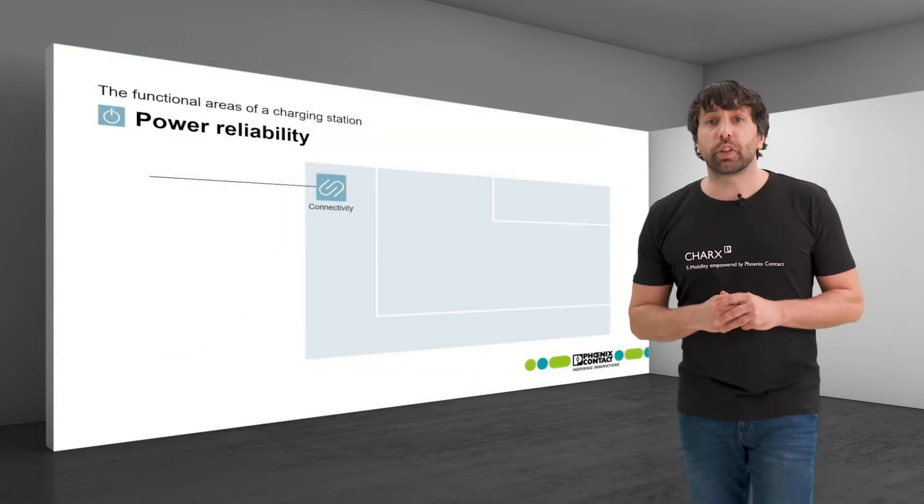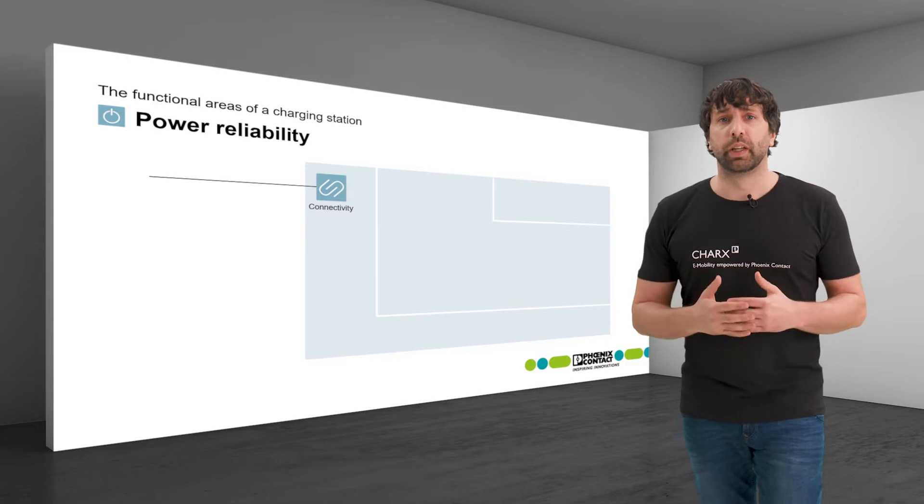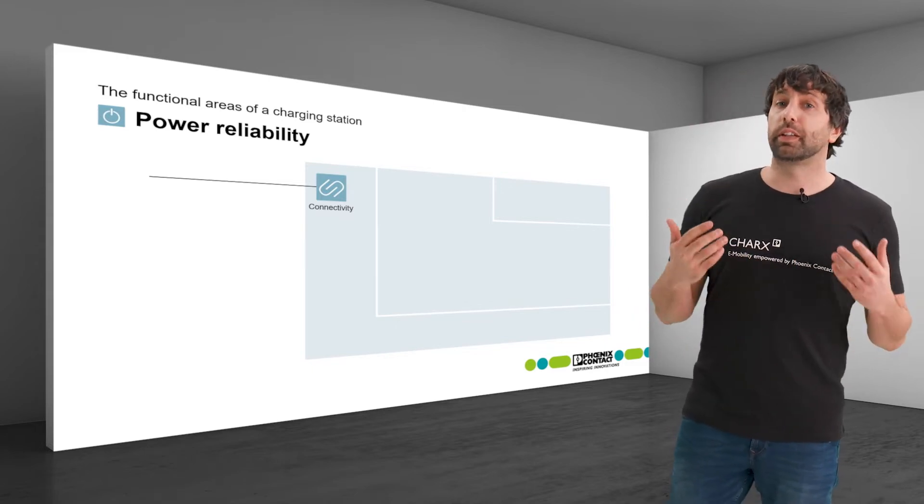First, the charging station is connected to the grid. Details are described in the functional area connectivity.